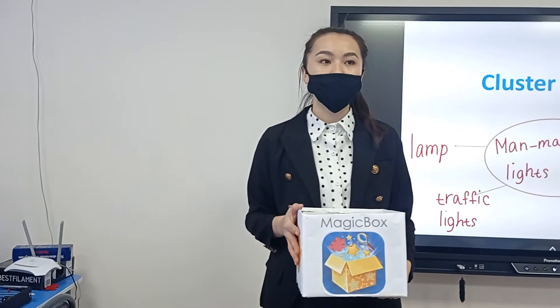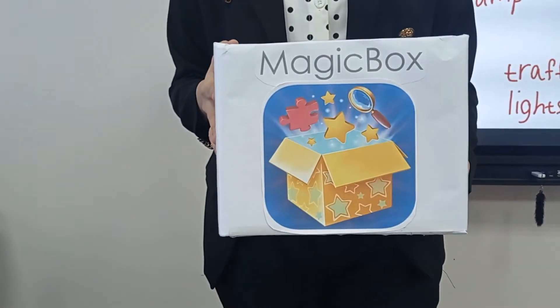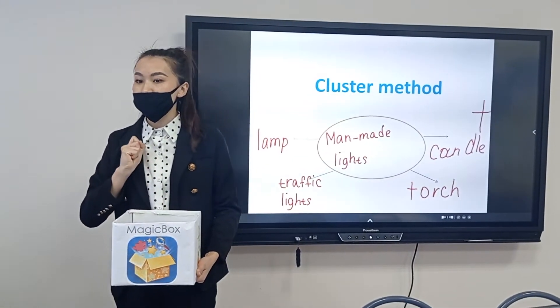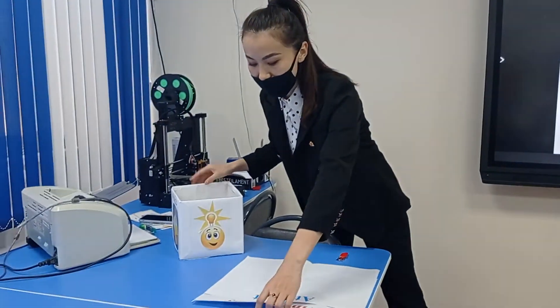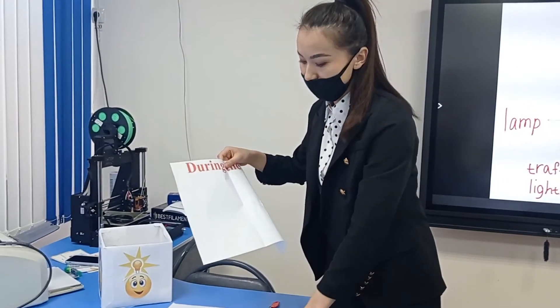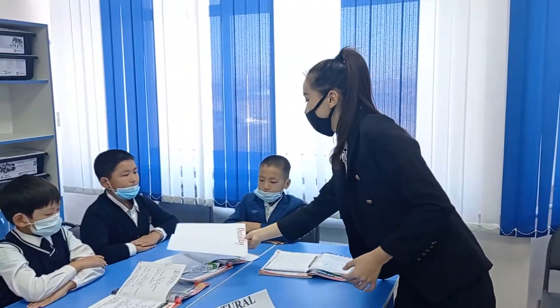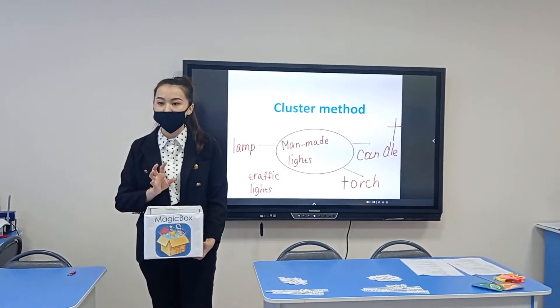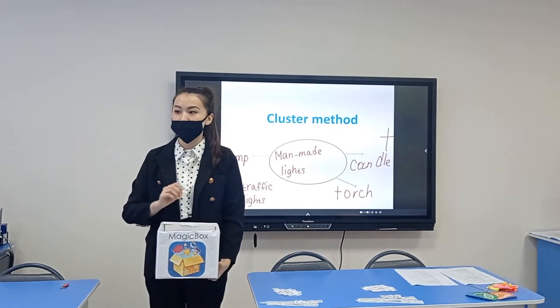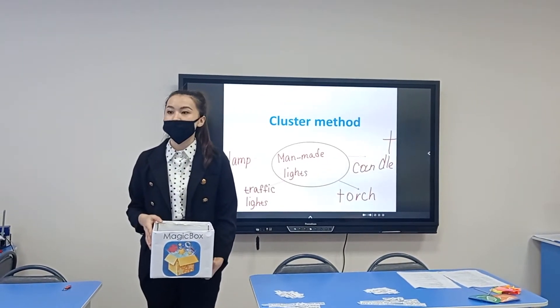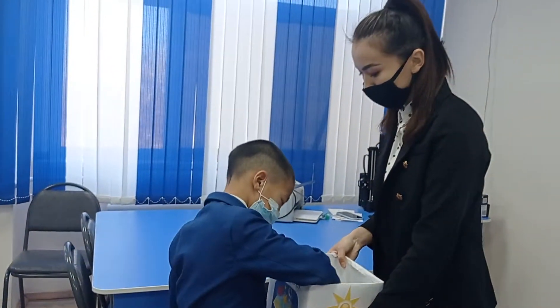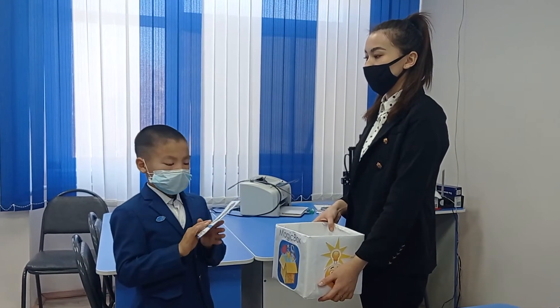Next task: magic box. This is a magic box — the magic words are hidden in the box. Take a picture. Natural lights group, come here. Take. Sit down.